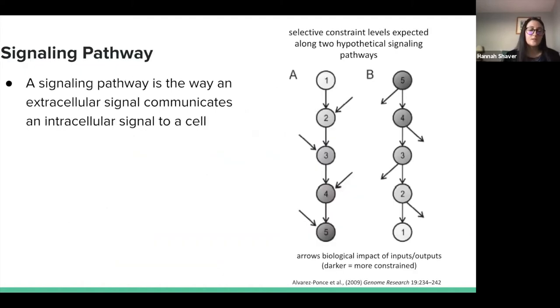Now we need to elaborate on what a signaling pathway is. A signaling pathway is the way that an extracellular signal communicates an intracellular signal in a cell. There are two general hypotheses of which genes in a pathway are under greater evolutionary constraint. Model A shows higher constraint occurs later in the pathway, whereas Model B shows constraint earlier in the pathway. Data suggests that the insulin pathway follows Model A.